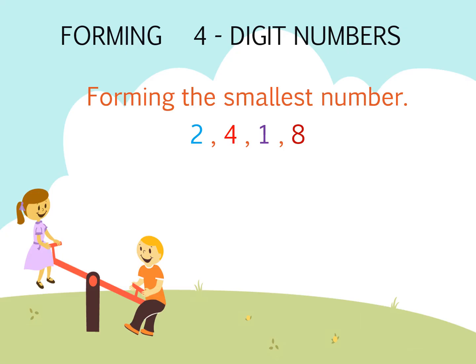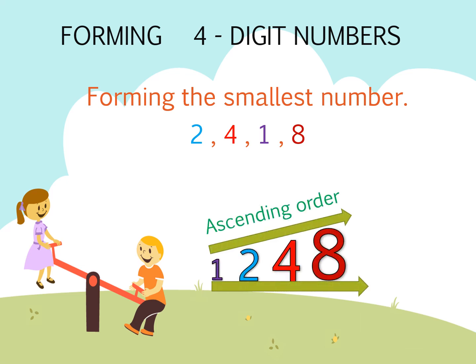First we will learn how to form the smallest number using the given digits. To form the smallest number with the given digits, the first thing we have to do is arrange the digits in ascending order. We have already learned in our previous videos how to arrange numbers in ascending order. When the numbers are arranged from the smallest to the greatest, we say they are in ascending order. Here 1 is smaller than 2, 2 is smaller than 4, and 4 is smaller than 8, so these numbers are arranged in ascending order.